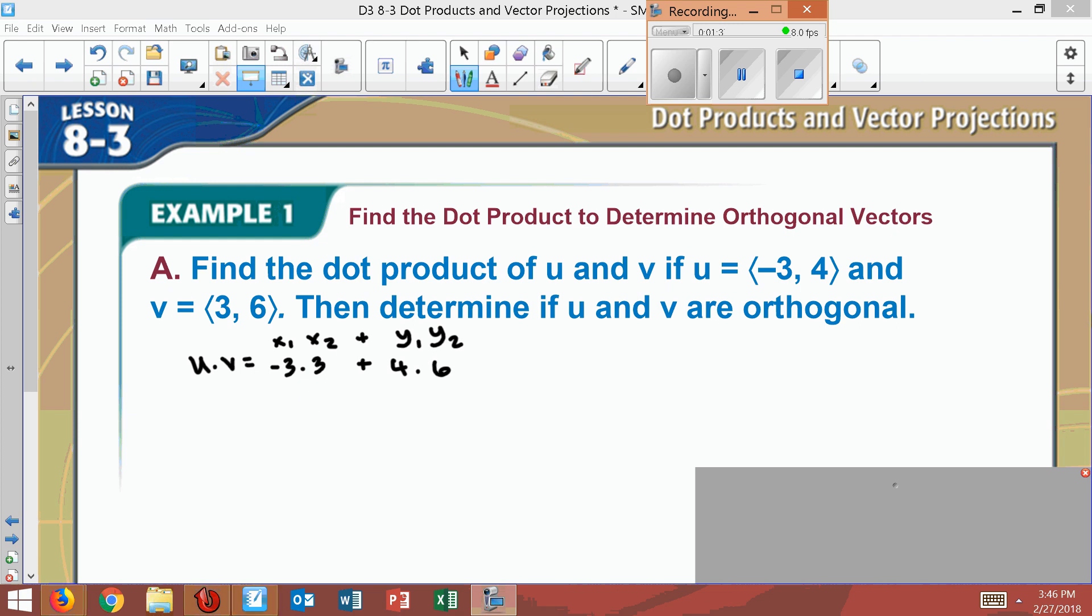So negative 3 times 3 is negative 9. And then I add that to 24. 24 minus 9 will equal 15. So that means U dot V, the dot product, is equal to 15.